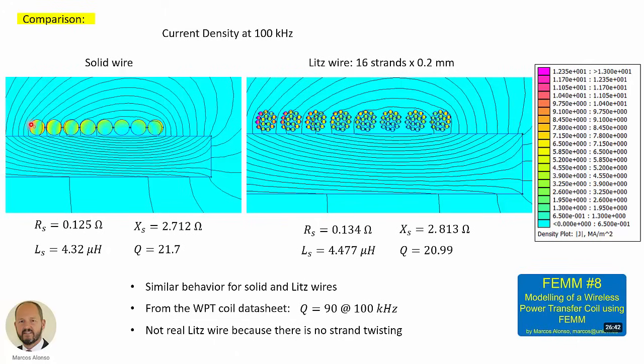At the end, we can see that the distribution of the current density is very similar in both cases. Here, for example, we have a higher current density, then it decreases and then increases again. And this is the same situation here. The current density is high here, it's smaller here, and then increases again.